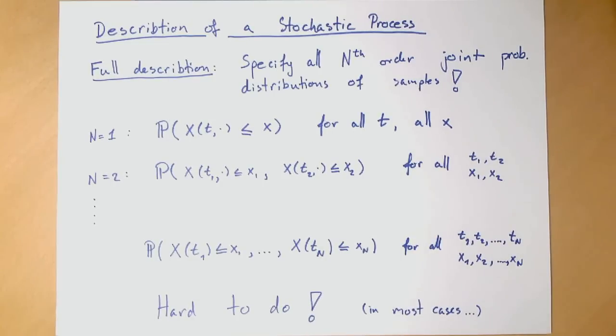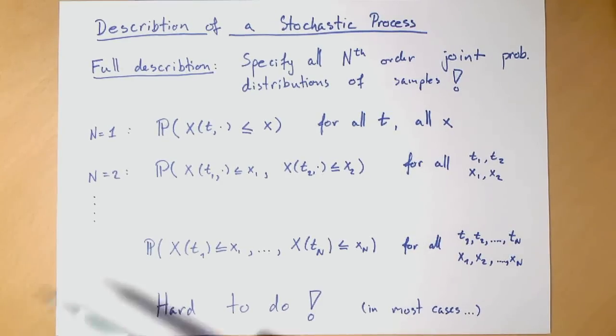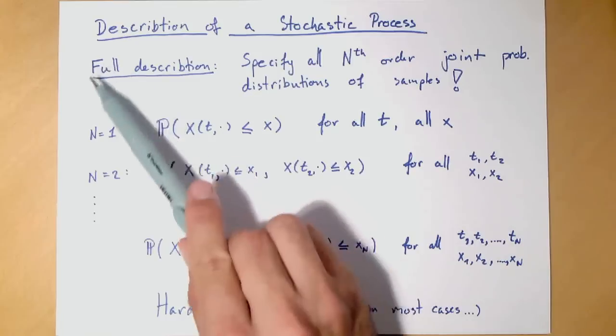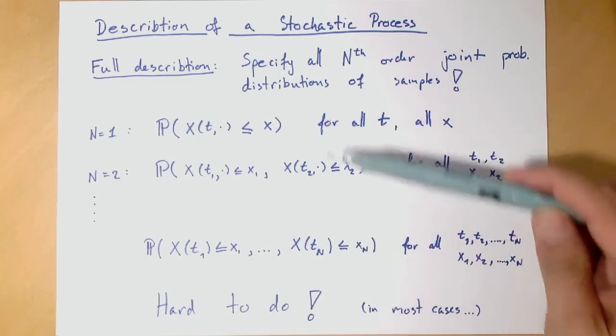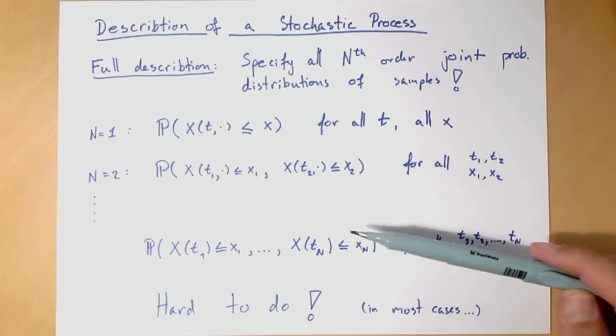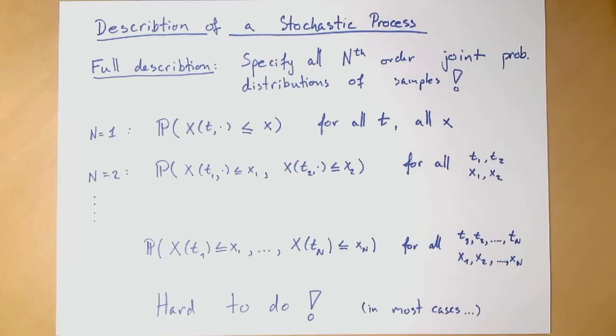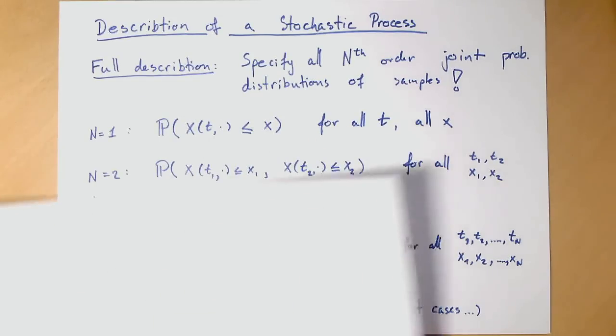In general, we would have to give up all hopes on actually achieving a full description. It's far too much work to specify all of these PMFs, if it is at all possible. So in most cases, actually, we settle for something less. We settle for a partial description, not a full description, but a partial description of a stochastic process.